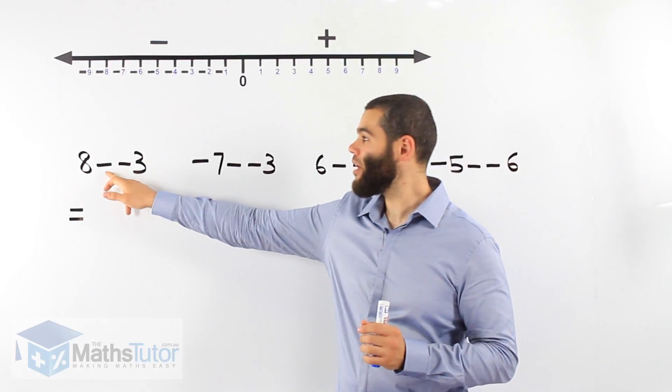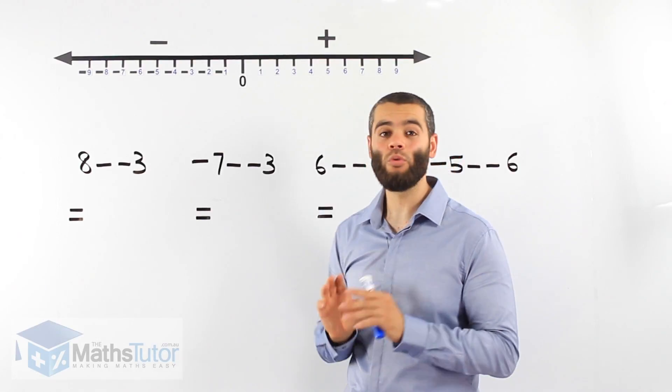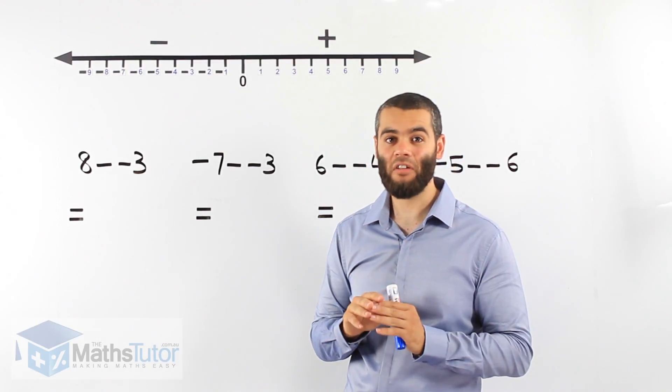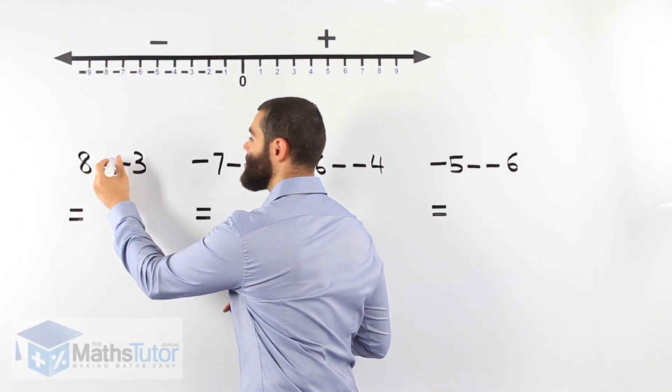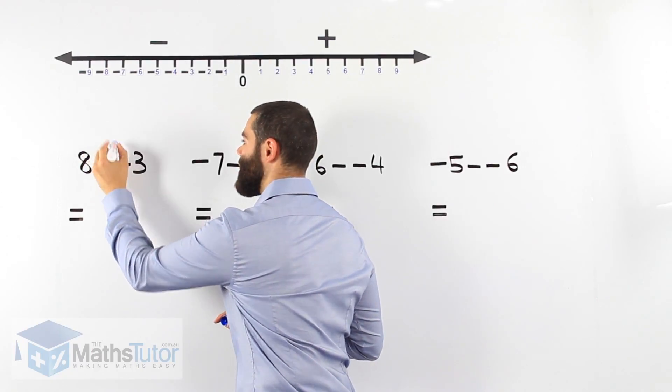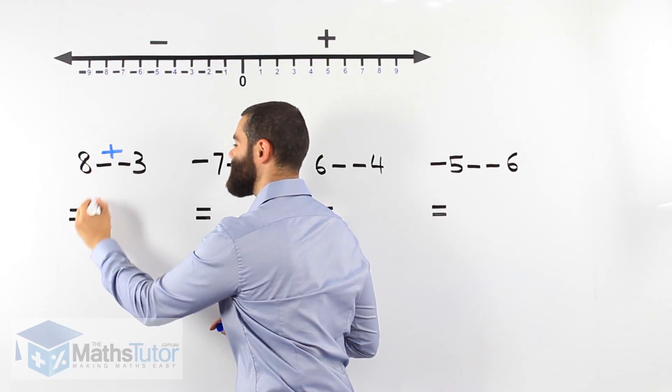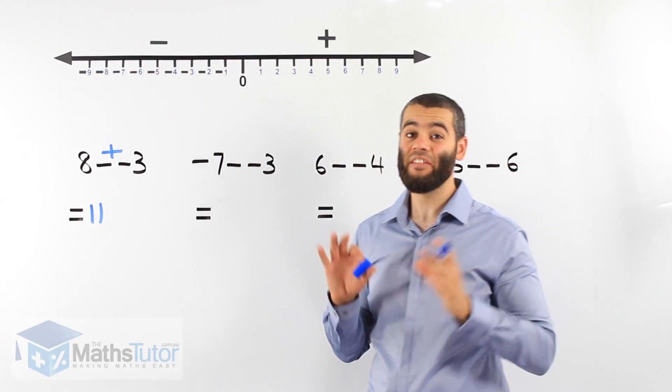We have 8 minus negative 3. The rule is when we have two negatives sitting side by side, they join forces and they become a plus. So 8 minus negative 3, they become a plus. 8 plus 3, our answer is 11. It's that simple.